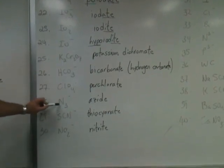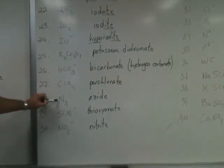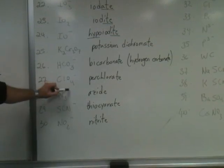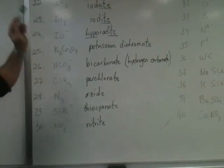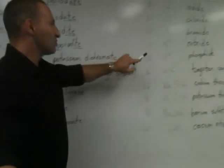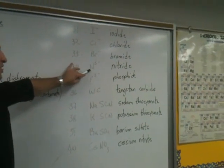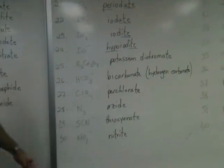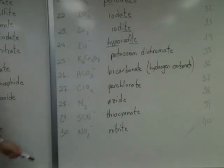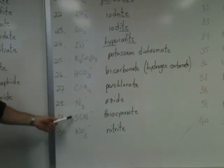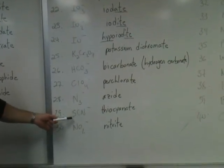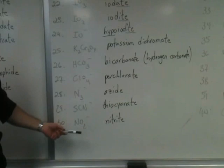A frequently confused anion is azide — this is three nitrogen atoms with a negative one charge. Not to be confused with the nitride anion, which is one nitrogen atom with a negative three charge, so be aware of that distinction. If you replace the oxygen atom in cyanide with a sulfur, we call it thiocyanate.